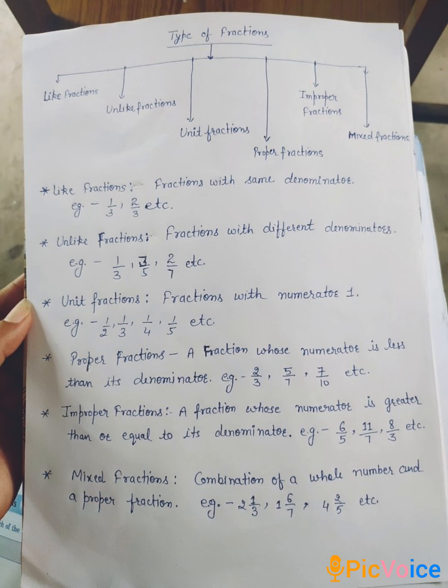Fourth number, proper fraction. A fraction whose numerator is less than its denominator. For example, two by three, five by seven, seven by ten, etc. are proper fraction.